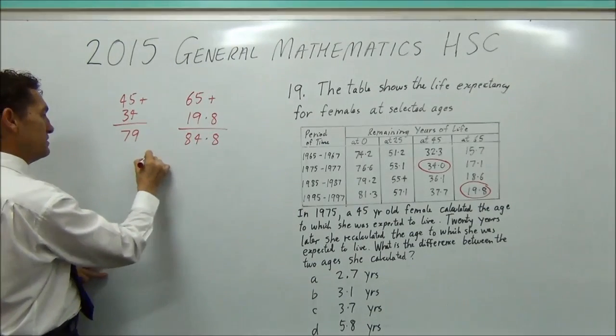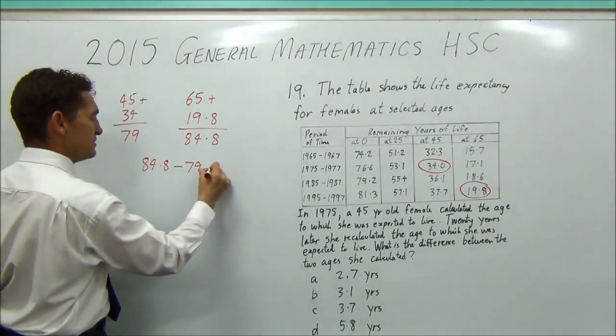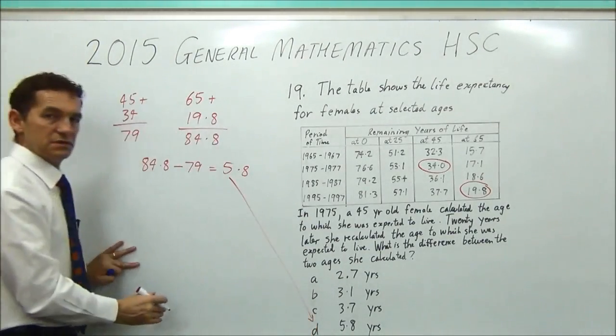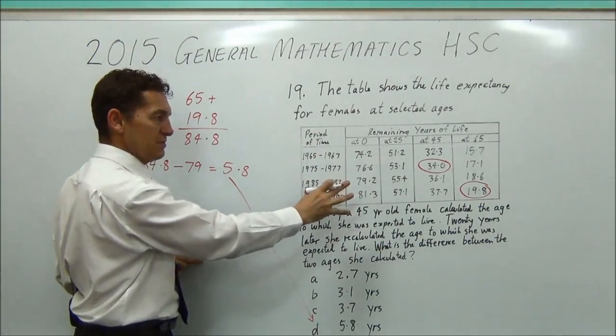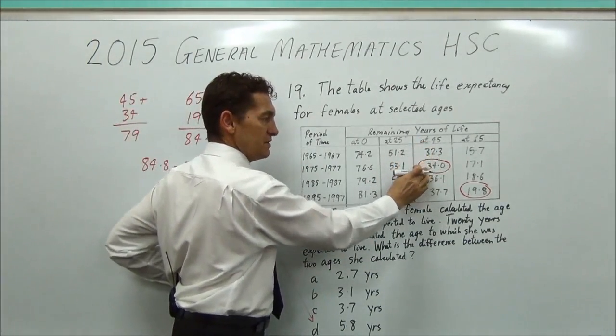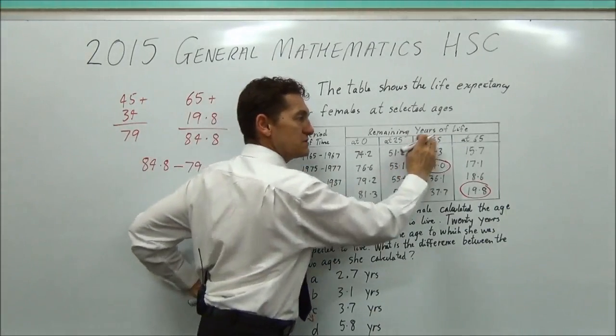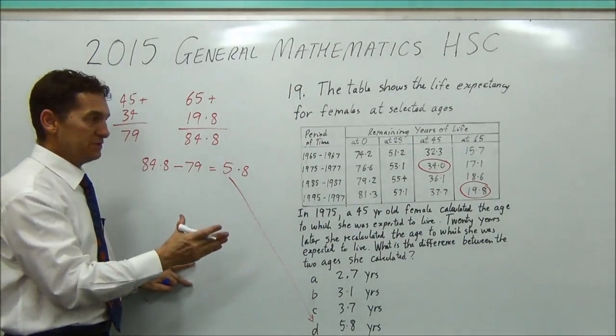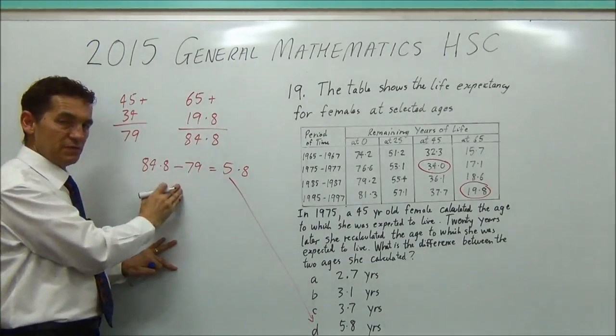So you've got these two differences. And you want to know what is the difference between this and this. And you're going to get that number, take away that number. So 84.8 minus 79 equals 5.8, which is D. So it's quite simple maths. The trick is in reading this diagram or this table and realising she's here to get this number. And then 20 years later, which is down here and also across here, you want that number. So a little bit confusing, possibly a bit more difficult, but not very difficult maths to actually figure out what the problem is.